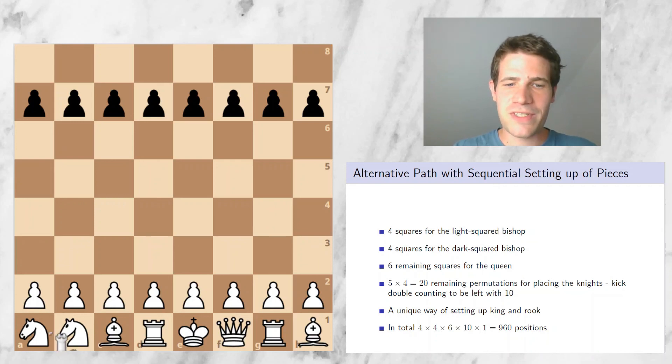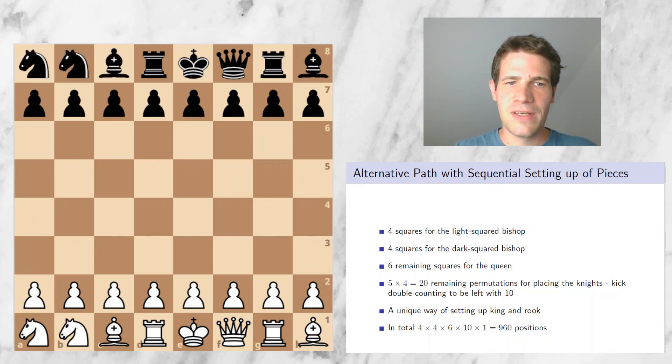All right, so what is left to do in order to start your Fisher Random game? Well, I guess that's pretty obvious. You just do the same thing for the black player. So now it's time to start your Fisher Random game. You know why there are exactly 960 starting positions.